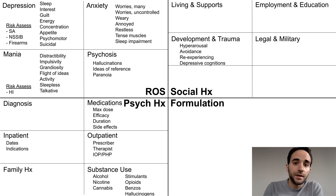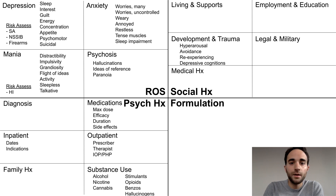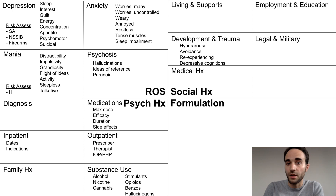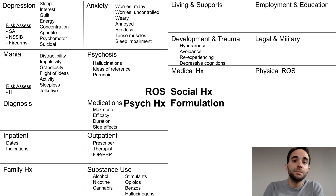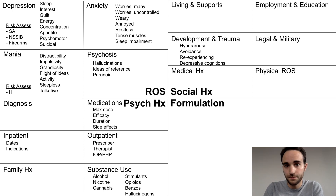Finally, in some cases it's important to ask about legal and military history. In this section, you should also complete a brief medical history, including relevant chronic illnesses, current medications, and allergies to medications, and complete a physical review of systems, as you would during any medical interview.